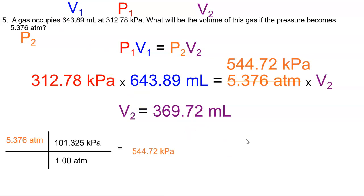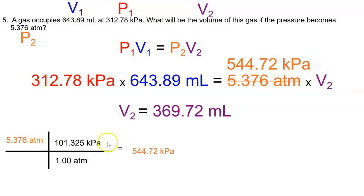I'm rounding most of the time to two places past the decimal. Please take a moment to pause your video and make sure you understand this — re-listen if you need to — and make sure you can physically get this answer on your calculator. To receive credit, you must show everything on the screen: a generic formula, numbers with units, an answer with units, and any grids needed for unit conversions.